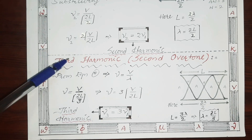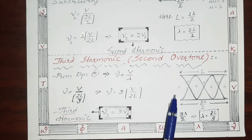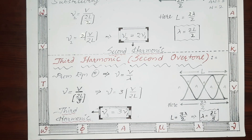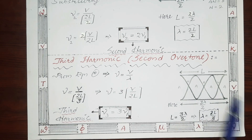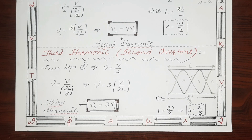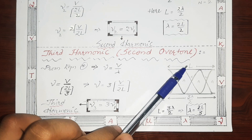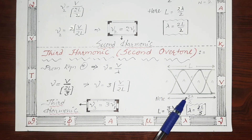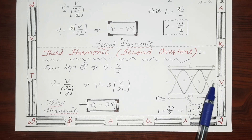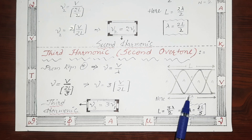Now let's move to the third harmonic or second overtone. A progressive wave travels to the second end, reflects back, and forms a stationary wave. Antinodes are formed at the open ends. The number of antinodes is 4 and the number of nodes is 3, with each increasing by 1 from the previous case. The length of the pipe L equals 3λ/2, since the distance between consecutive antinodes is λ/2 and there are three such intervals.